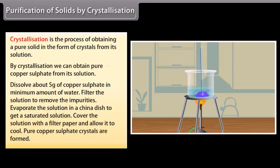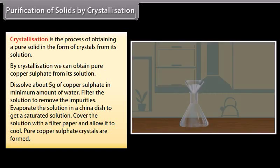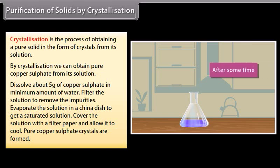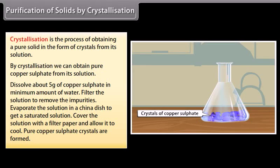Dissolve about 5 grams of copper sulfate in minimum amount of water. Filter the solution to remove the impurities. Evaporate the solution in a china dish to get a saturated solution. Cover the solution with a filter paper and allow it to cool. You will see pure copper sulfate crystals are formed.